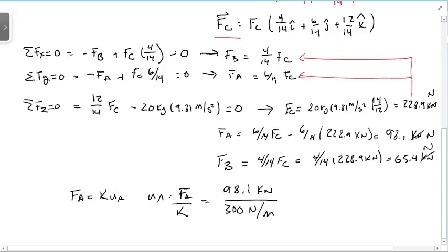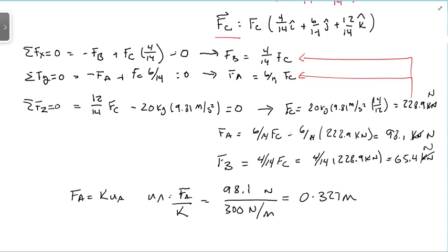OK. So this should just be a newton. And when I put the equation in there I get 98.1 divided by 300 is 0.327 meters.